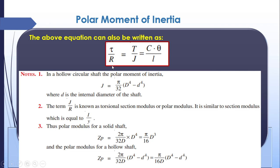For a hollow shaft, the polar moment of inertia is J = pi/32 · (D⁴ − d⁴), where d is the inner diameter. We also have a torsional section modulus called polar modulus, analogous to section modulus I/y in bending. The polar modulus is J / R. For a solid shaft, polar modulus = pi/16 · d³.